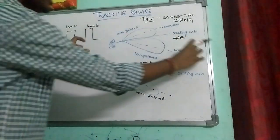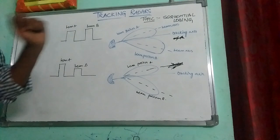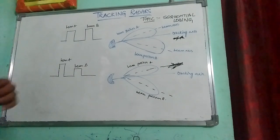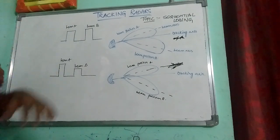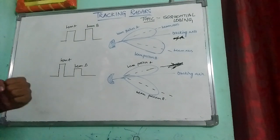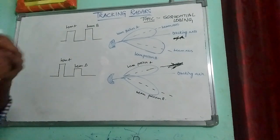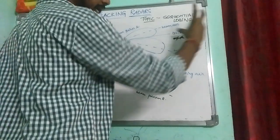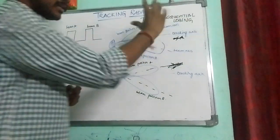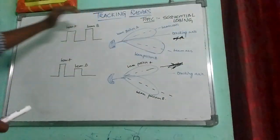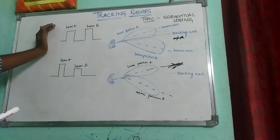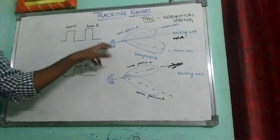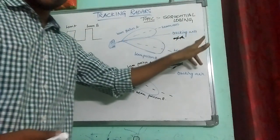These are the two different beam axes and beam positions. What happens is that the strength of the echo from the target will fluctuate at the switching rate. If the target is on the tracking axis, the voltages received at position A and position B are both equal.